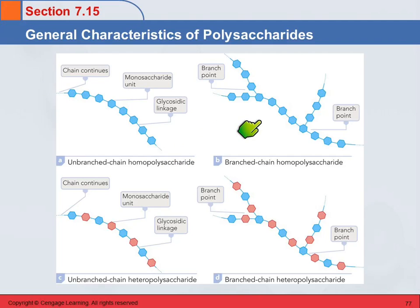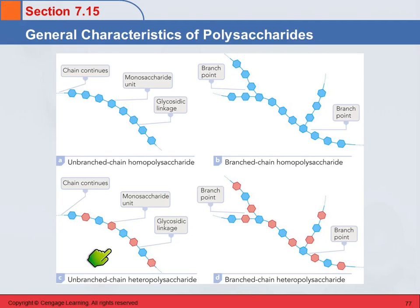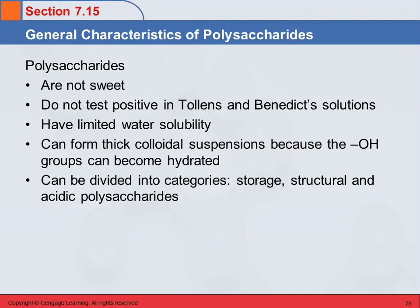You can also have a branched chain homopolysaccharide, where all the units are the same but now we have some branching. You can have an unbranched heteropolysaccharide with different units, and you can have branched chain heteropolysaccharides. Given all the different monosaccharides, it's really mind-boggling how many different polysaccharides there could be, but thankfully there are only a few that are biologically important, and those are the ones we're going to talk about.